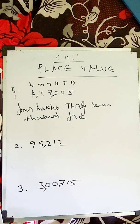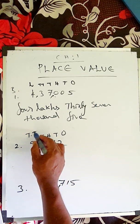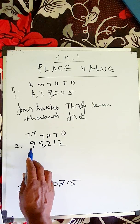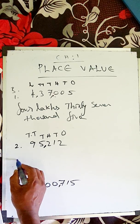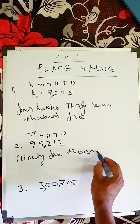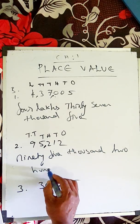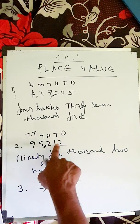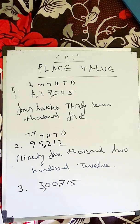Similarly for the next number: the place values go ones, tens, hundreds, thousands, ten thousands. There is no lakh here. The ten thousands and thousands give ninety-five, so that is ninety-five thousand. The hundreds give two hundred. Ten is ten and ones give two — so twelve. Answer: ninety-five thousand two hundred twelve.